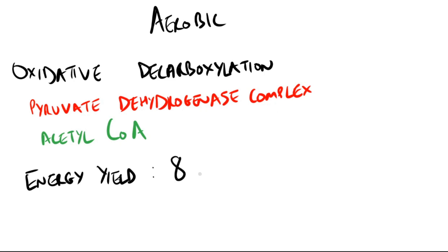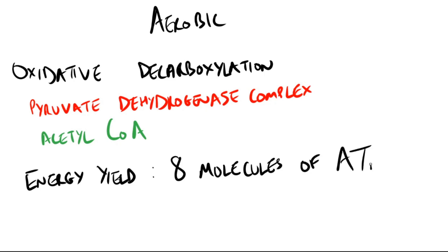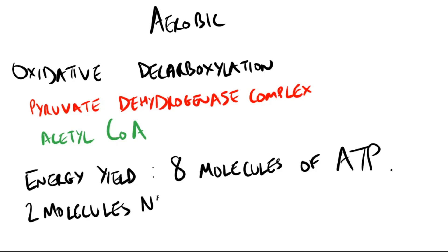The energy yield for aerobic glycolysis is eight molecules of ATP: two from glycolysis — the same as anaerobic — and six from the two molecules of NADH produced during aerobic glycolysis. One molecule of NADH gives approximately 2.5 — almost three — ATPs, so two molecules of NADH give us six ATPs.